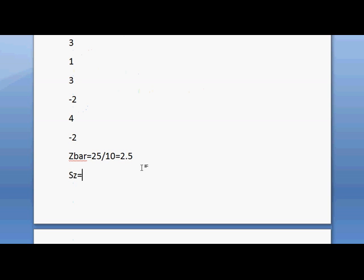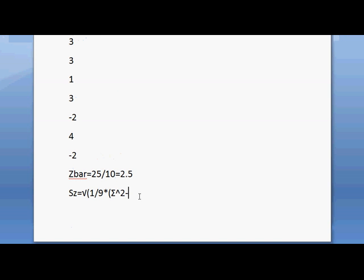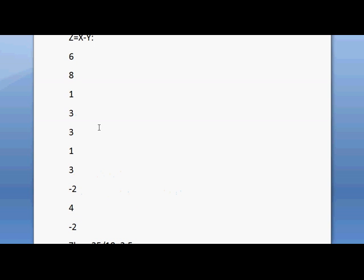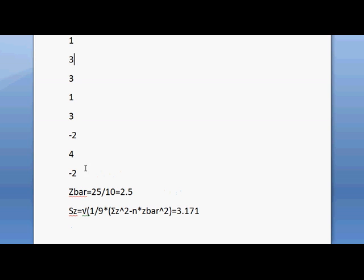And Sz is the sample standard deviation of Z. That is, √[1/(n-1) × (ΣZ² - n×Z̄²)]. That is, √[1/9 × (ΣZ² - 10×Z̄²)], which will give you the sample standard deviation of 3.171. Summation Z² is the sum of squares of Z: 6² + 8² + 1² + 3² + ... + (-2)².